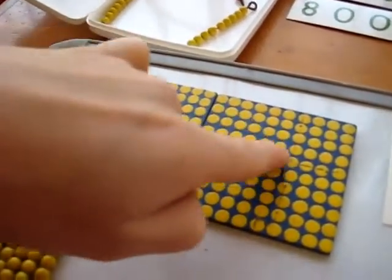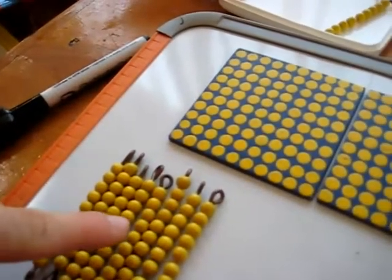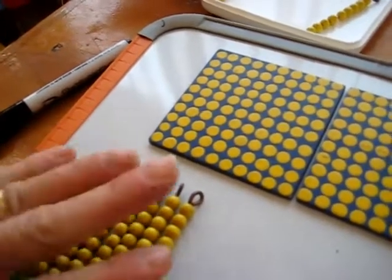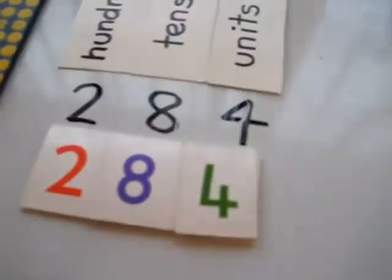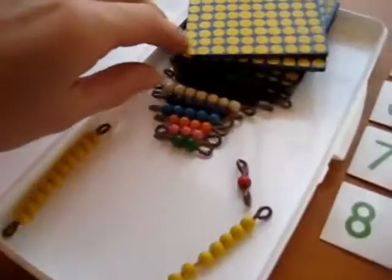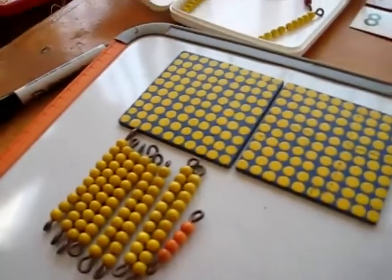So far we have 200: 100, 200. Then 10, 20, 30, 40, 50, 60, 70, 80. We need 284. So he goes and looks for the four. There we have our number.